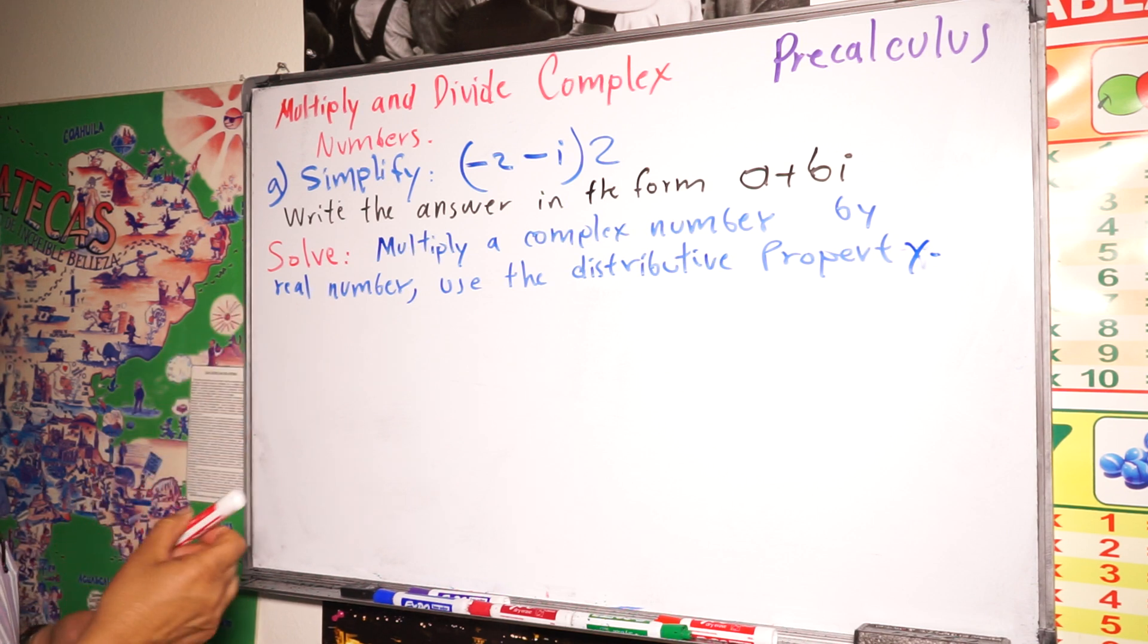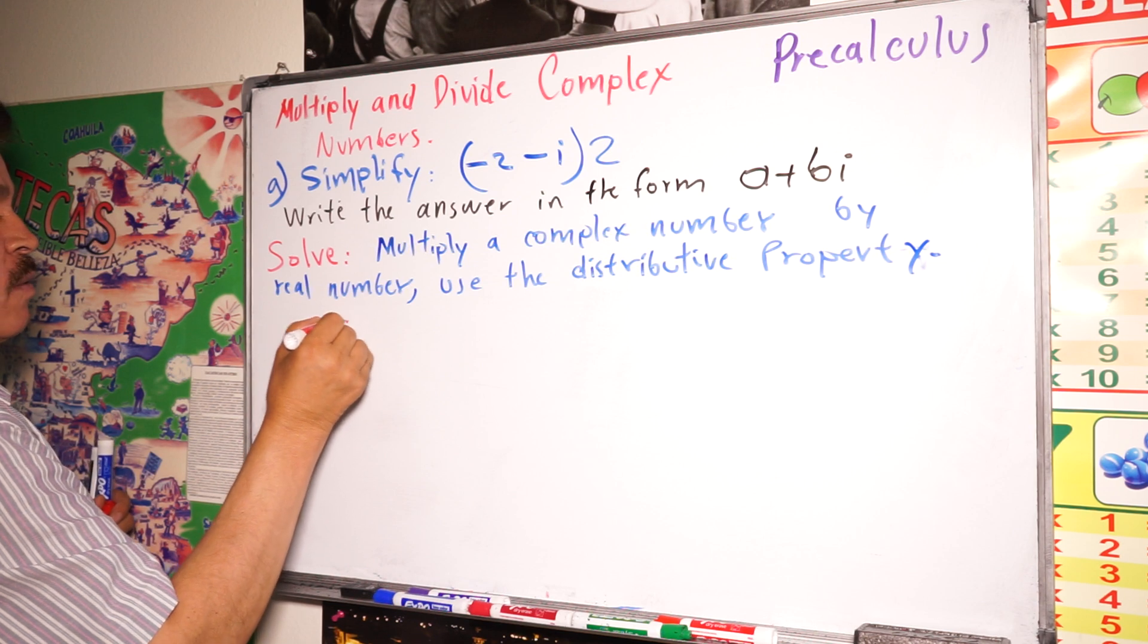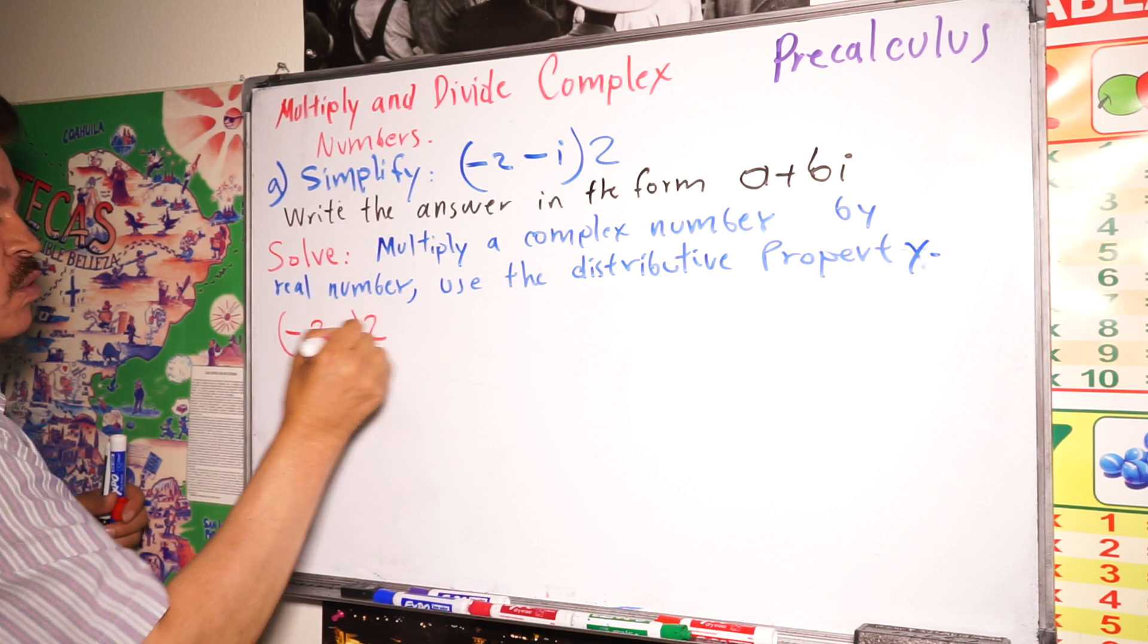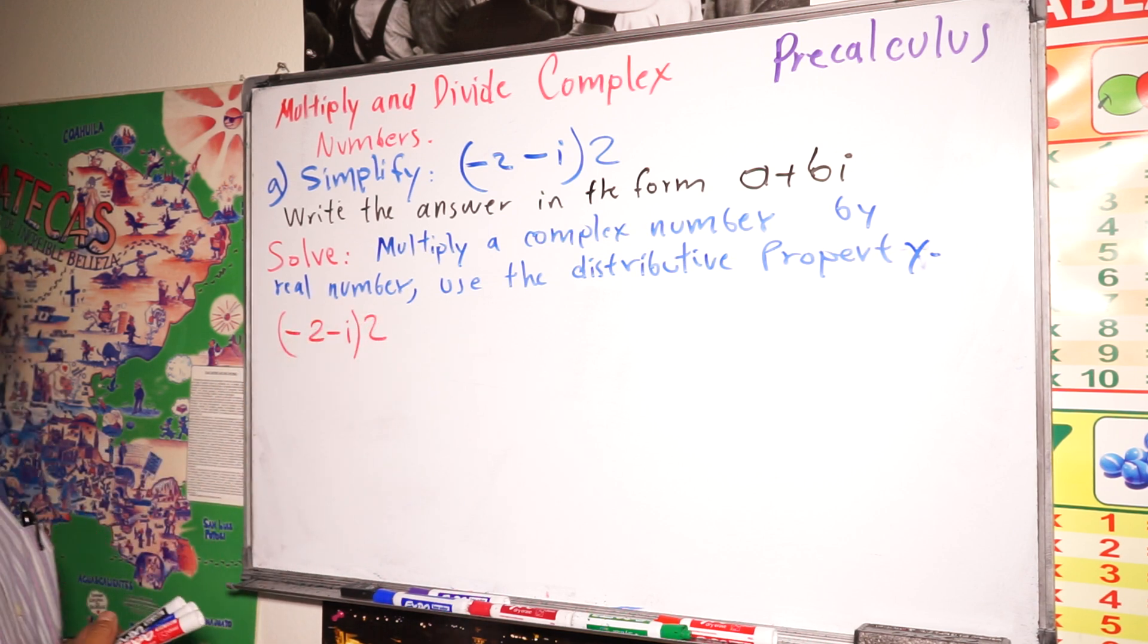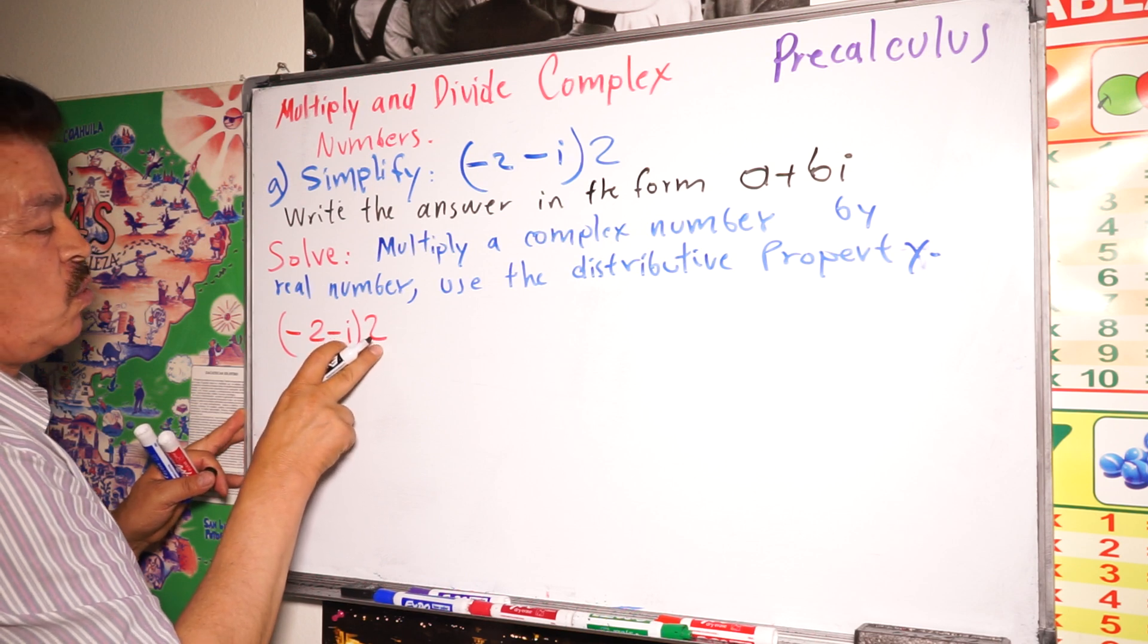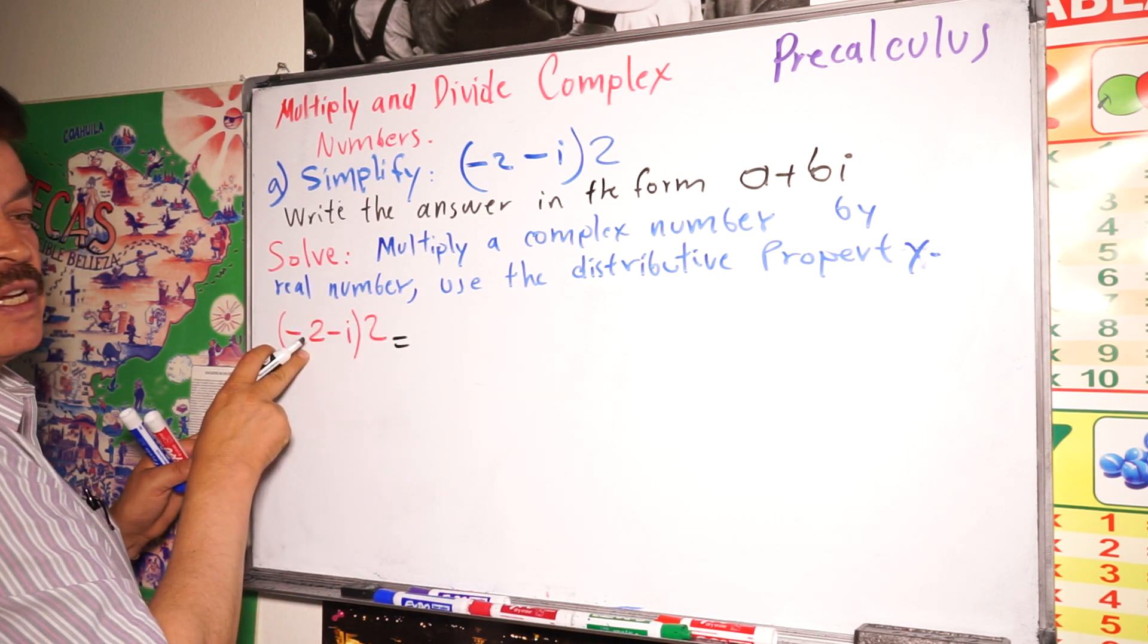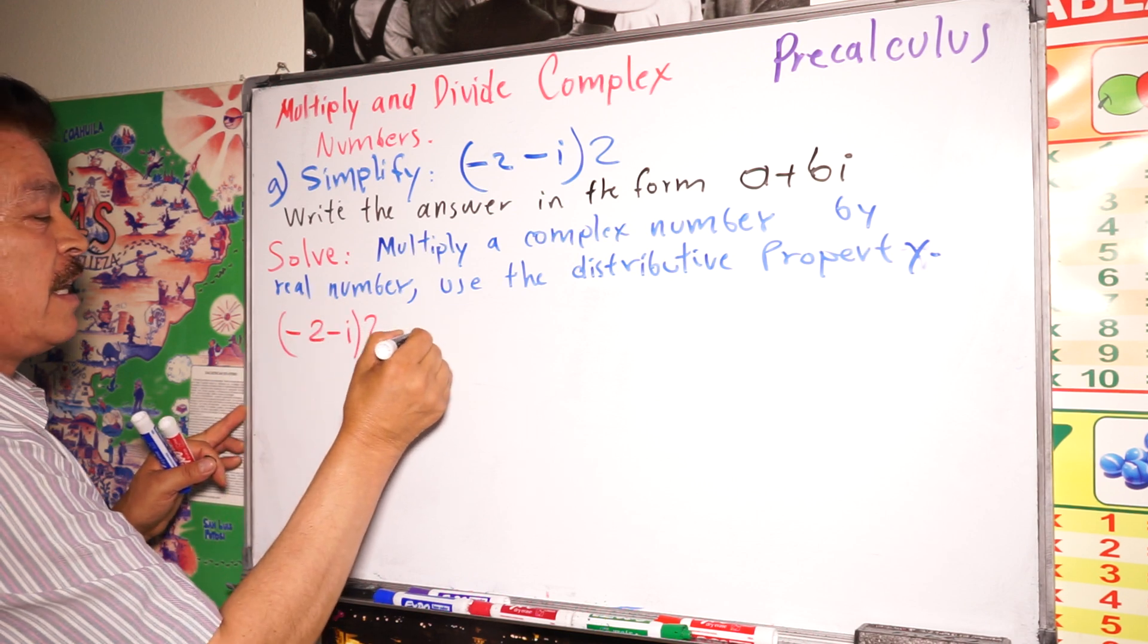Our problem is (-2 - i) × 2. It's very simple. If you use the distributive property, you multiply positive 2 times negative 2 equals negative 4. Positive 2 times negative i equals negative 2i.